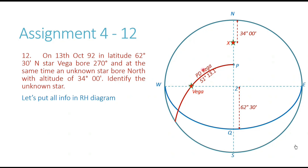Concentrate on the arc P to Vega — this arc is the polar distance of Vega. Polar distance equals 90 minus declination. From Vega to the equinoctial is the declination of Vega, and from the equinoctial to the pole is 90 degrees, so P to Vega equals 90 minus declination of Vega. We have the date 13th October 1992, and we can get the declination of Vega from the nautical almanac. Once we compute 90 minus that, we get the polar distance. So the PV side is now known to us.